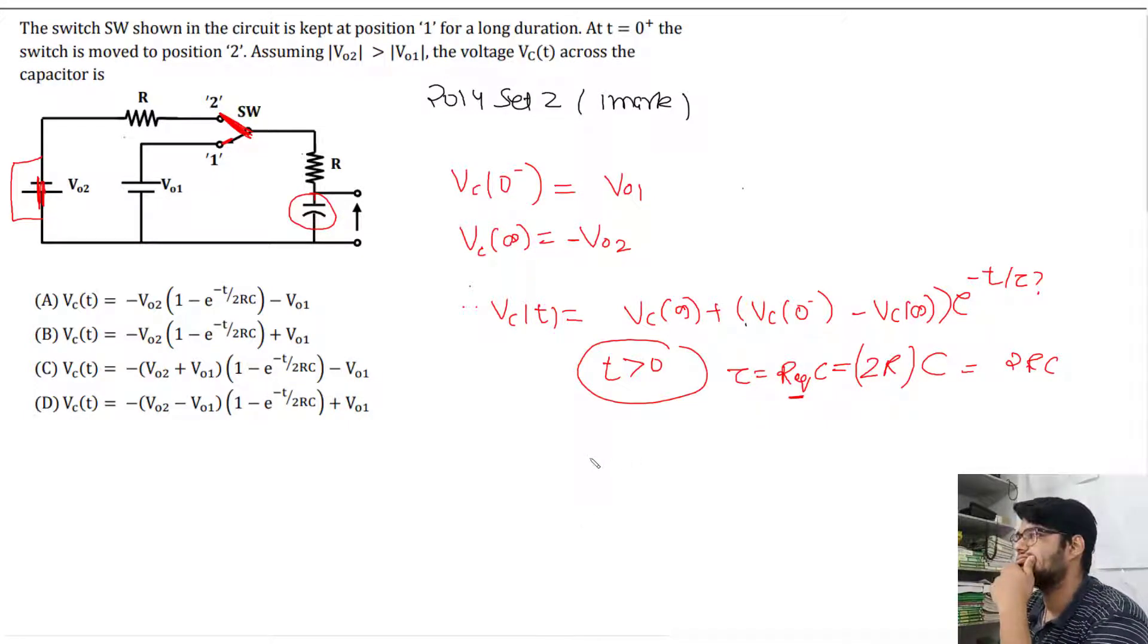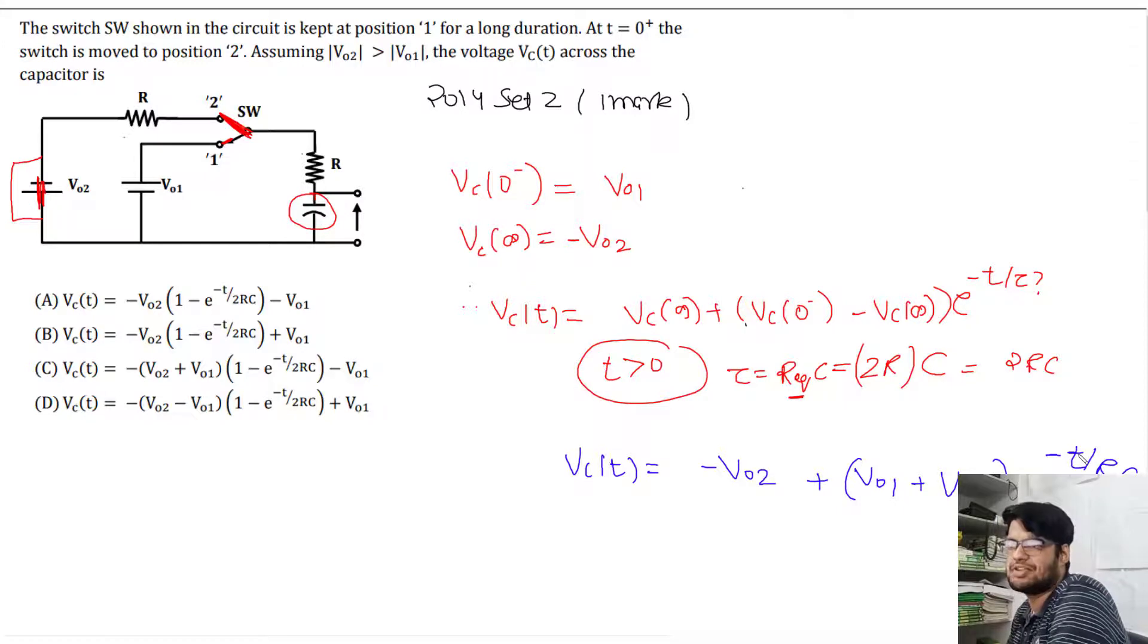So tau is also 2RC. Vc equals Vc(∞) which is minus V02, plus Vc(0) which is V01, minus Vc(∞). Minus and minus cancel, so V02 times e to the power minus t by 2RC.